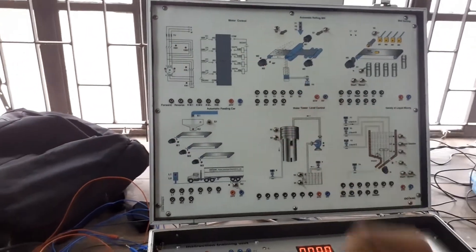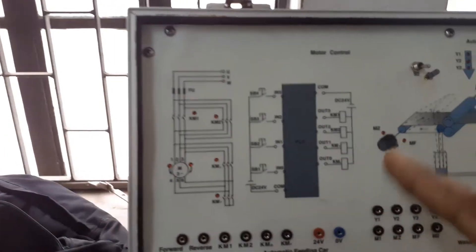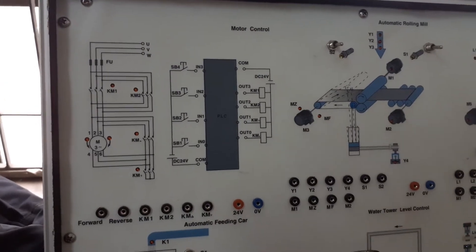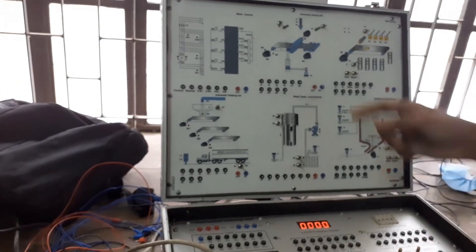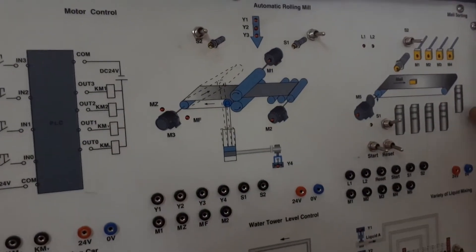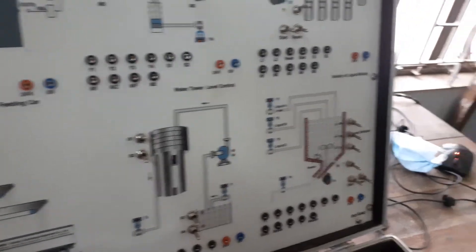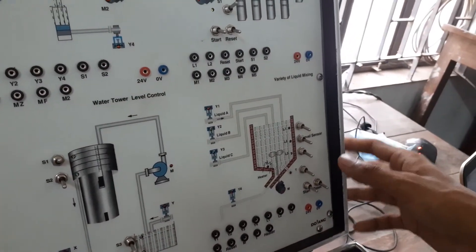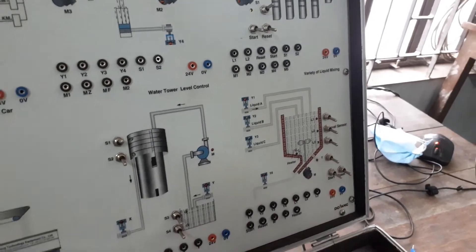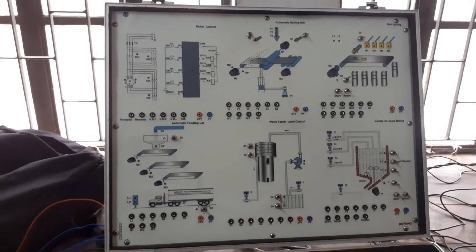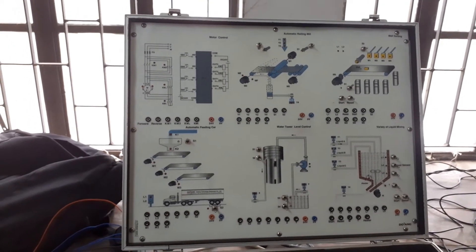The first thing you can see is the motor control system. In the motor control system you can see the input/output. You can see the simulation — the automatic roller mill, milling store, automatic feeding car, water tower control, and verification of liquid mixing. In the industry you can use the production system: milling, storing, rolling, and the system.